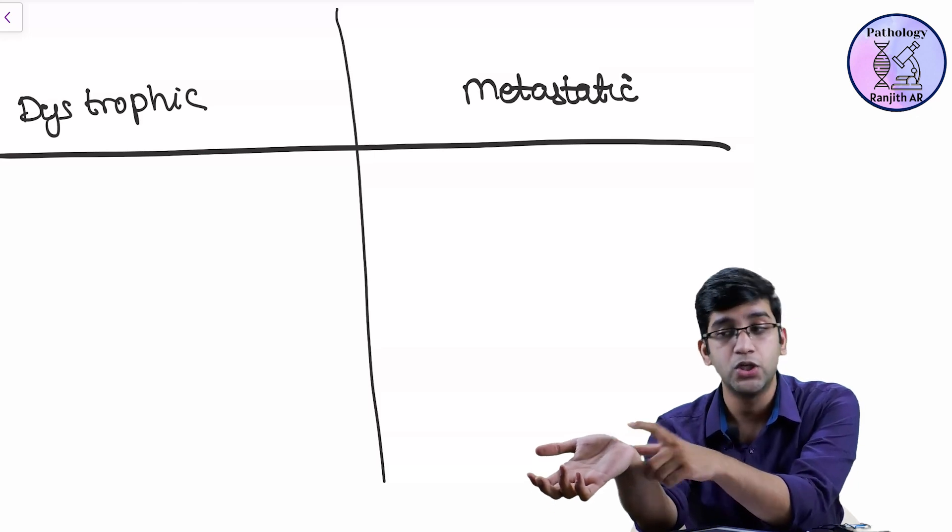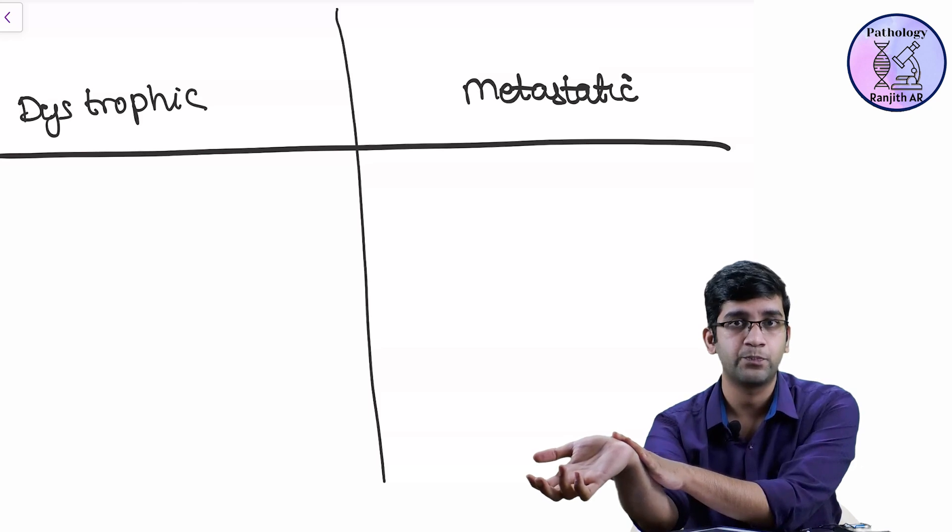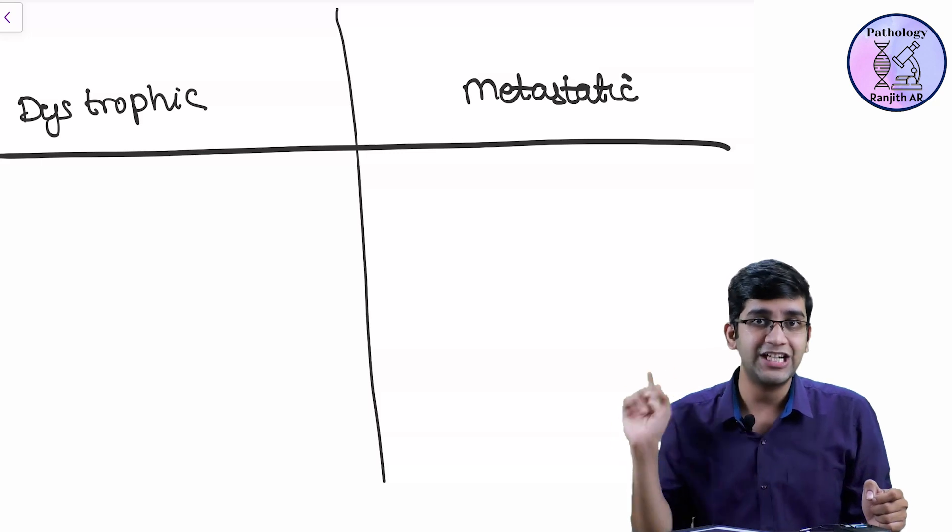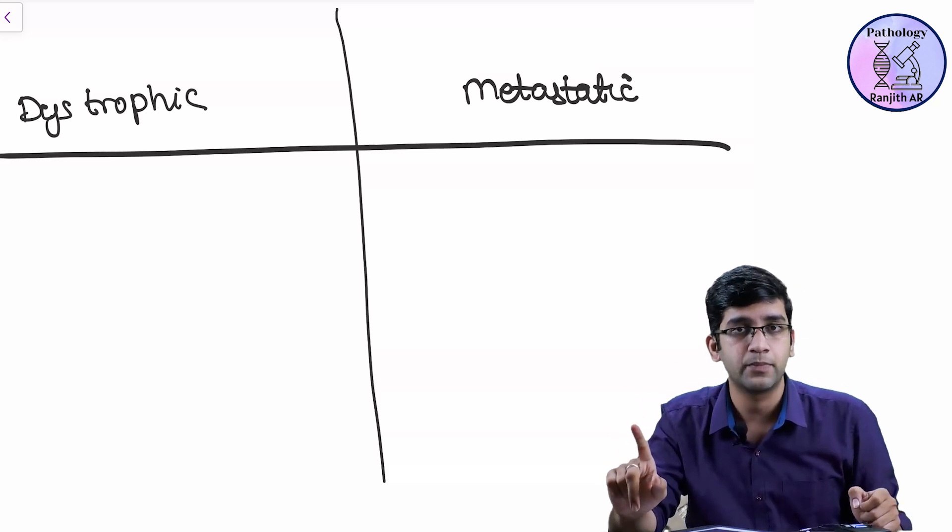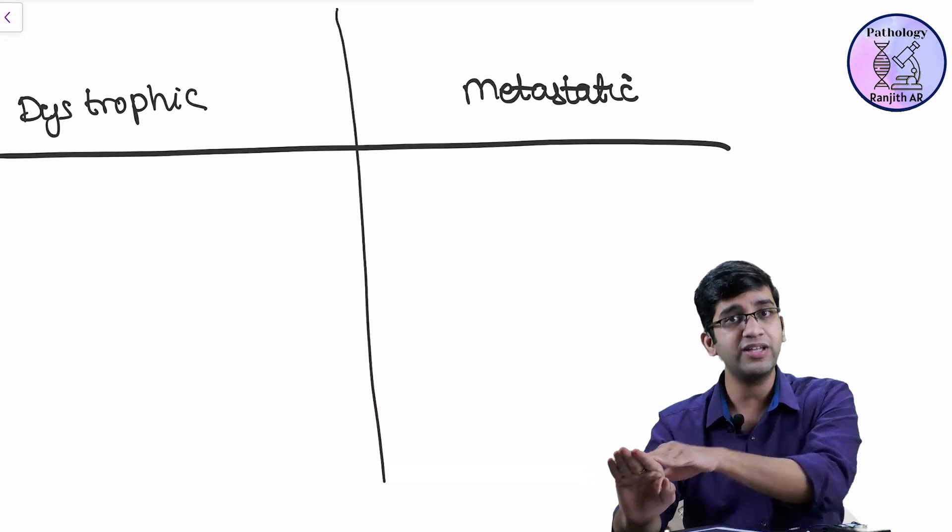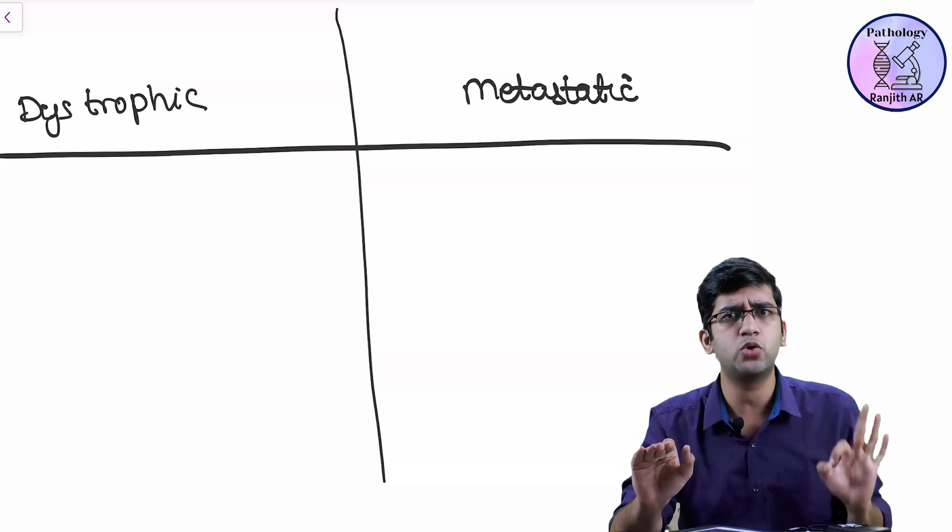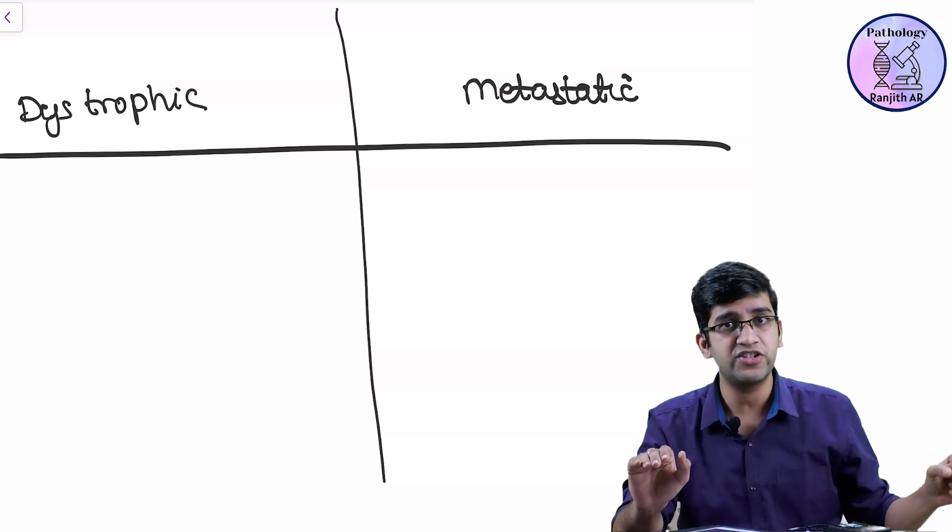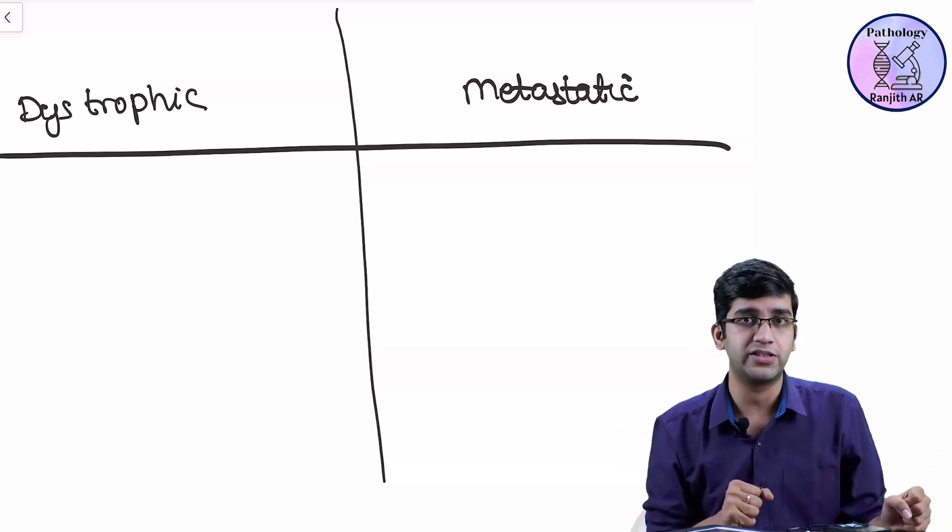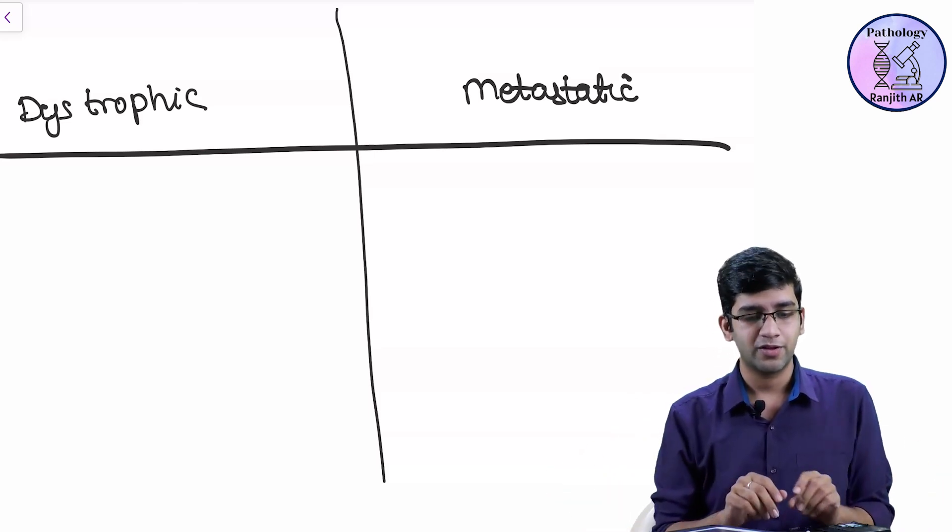Anywhere in the body when I have an abnormal tissue, calcium can get accumulated. When calcium gets accumulated here locally in that tissue, do you think the serum calcium will be normal or abnormal? Absolutely normal. No disturbance in serum calcium - homeostasis is perfect, but this tissue is abnormal so I'm going to have calcification. That's all you need to know.